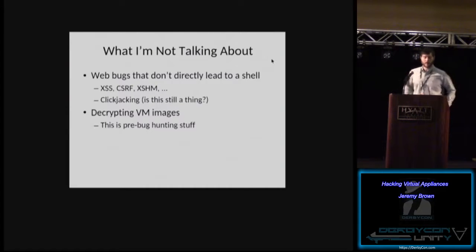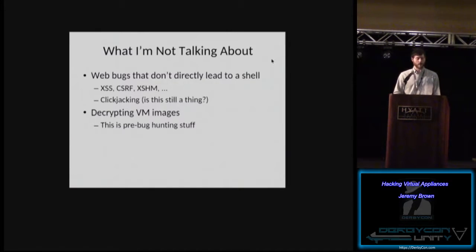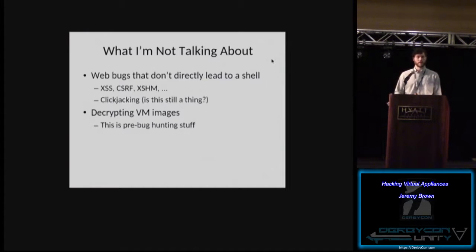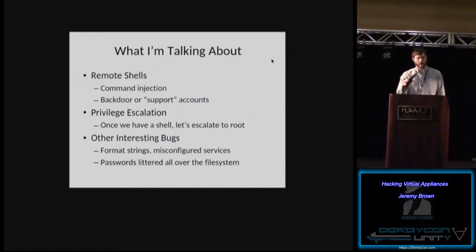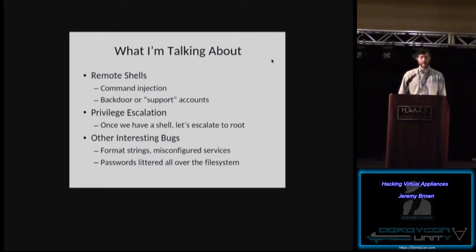First, what I'm not talking about: web app bugs that don't directly lead to a shell, and decrypting VM images — that's stuff you need to look at or have the keys for before you start looking for bugs. What I am going to talk about is remote shells, which seems to be everyone's favorite. Command injection, backdoor accounts, and once we have a shell, if it's not already root, escalating to root, plus some other interesting bugs along the way.